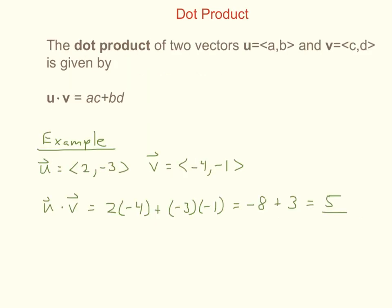The thing you have to remember with the dot product is that it is the product between two vectors. It is also often called the scalar product because the result is going to be a single value — a number. The dot product of two vectors u equal to the vector (a, b) and v equal to the vector (c, d) is given by u dot v equals a times c plus b times d. For example, I have a vector u equal to (2, negative 3) and a vector v equal to (negative 4, negative 1).